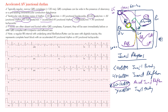Looking at this EKG, it's best to look at V5. Notice there is no P wave preceding any of the complexes — no P wave at all. It's a regular rhythm, meaning the intervals from one R wave to the next are the same. Measuring these out, there's no real difference between interval durations.